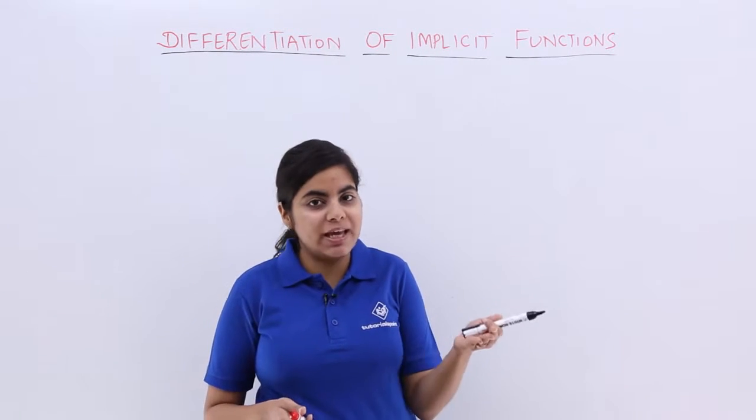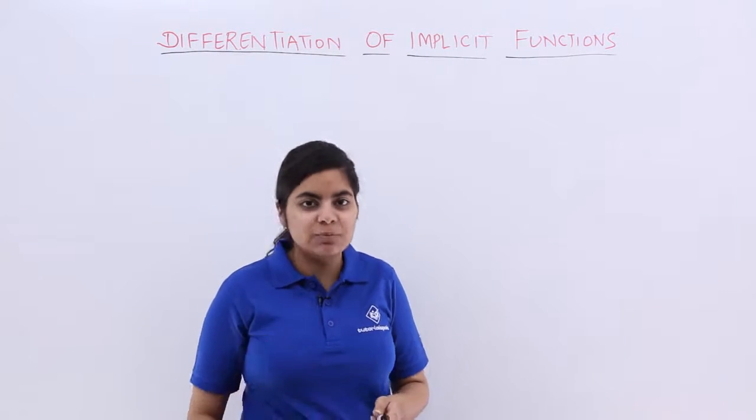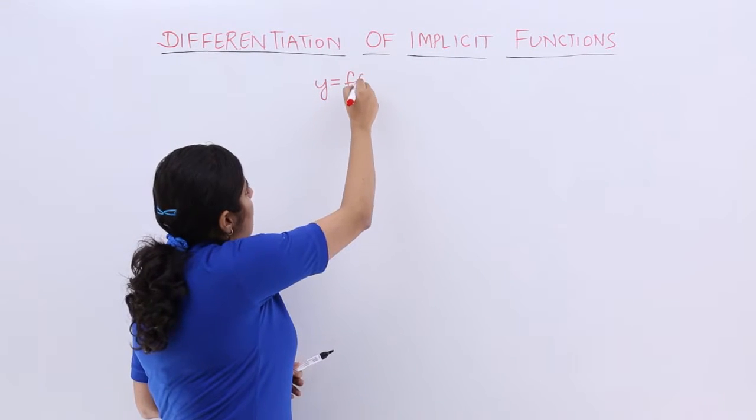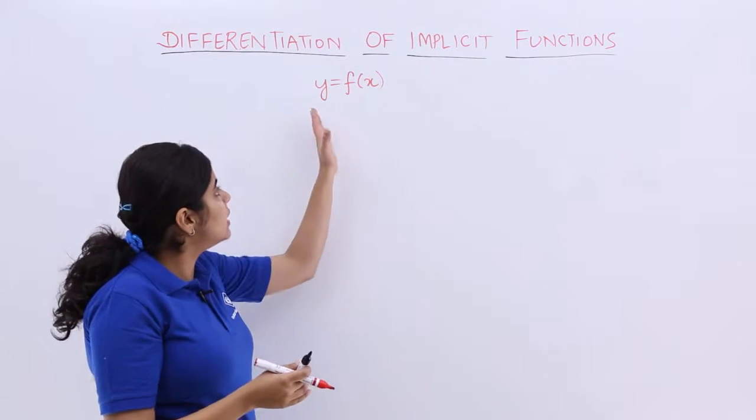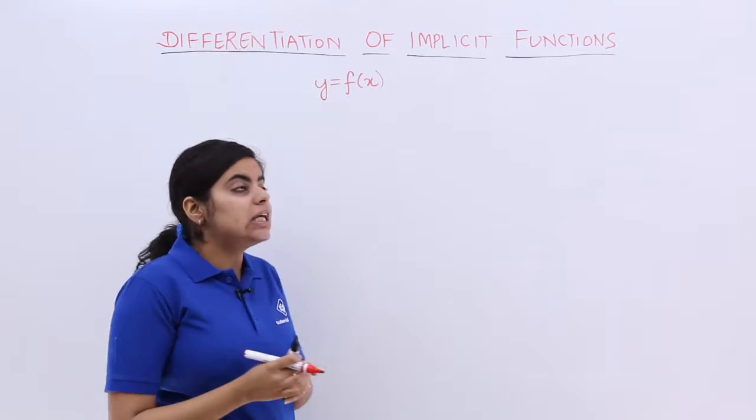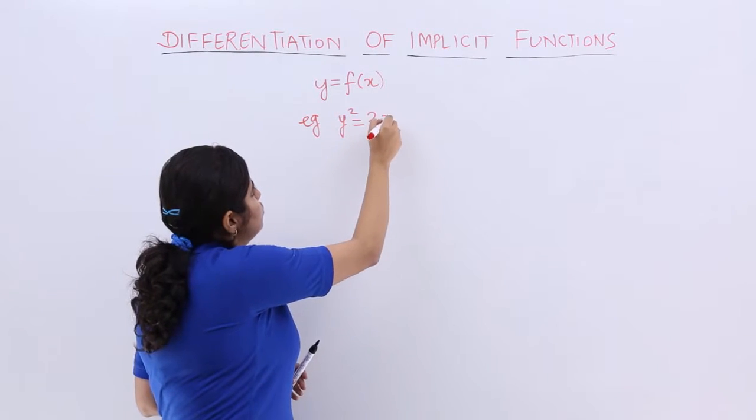The first one would be explicit and the second one would be implicit. The explicit functions are something like this, wherein we have y is equal to f of x. That means y and x are basically separated easily. Example would be y square is equal to 2x.